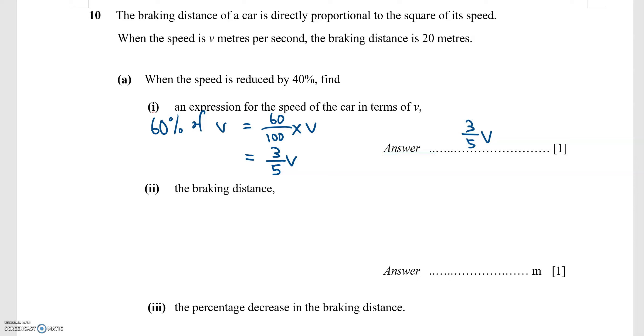Part 2: they want us to now find the braking distance when the speed is reduced by 40%. Now, let's write an equation in terms of the initial speed and braking distance first. So I know that the braking distance, I'm going to let the braking distance be d.